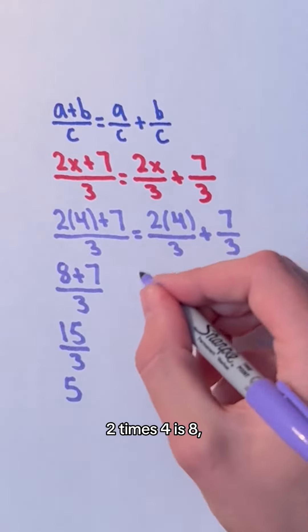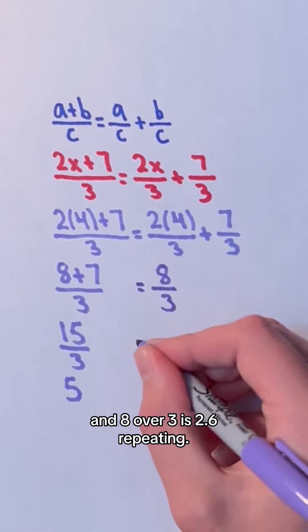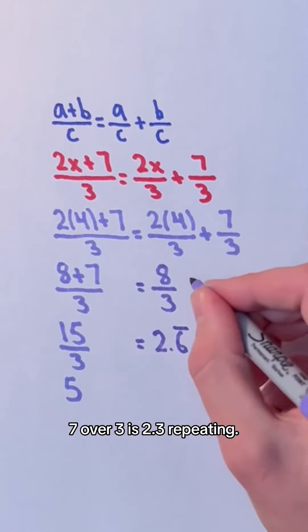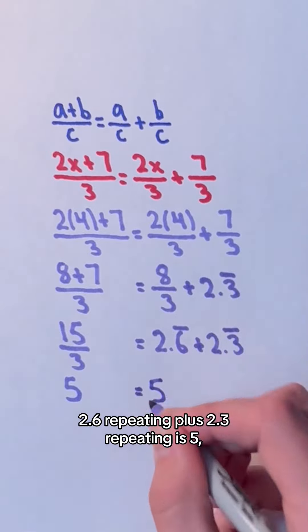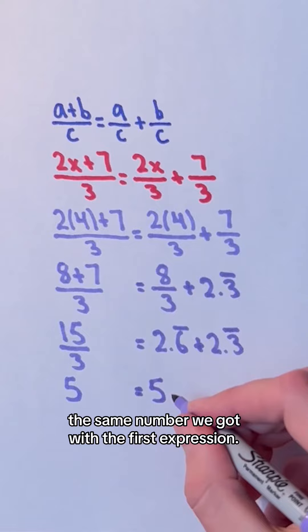In the second expression, 2 times 4 is 8 and 8 over 3 is 2.6 repeating. 7 over 3 is 2.3 repeating. 2.6 repeating plus 2.3 repeating is 5, the same number we got with the first expression.